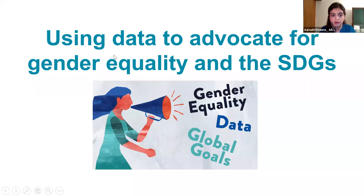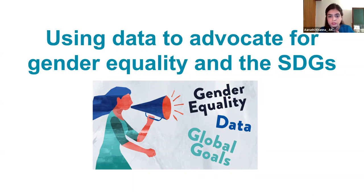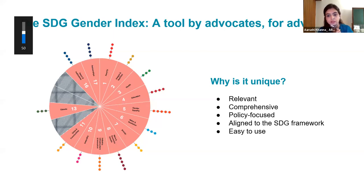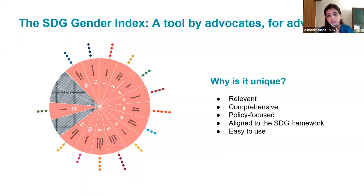It's great to see that we have so many participants who've engaged in research and advocacy and have some comfort in using gender data. I hope the conversation today would be useful for everyone as we spend some time introducing you to the SDG gender index. The SDG gender index is the most comprehensive index on gender equality aligned to the sustainable development goals. The index includes 51 gender-sensitive indicators across 14 of the 17 sustainable development goals, and it covers 129 countries across the world. Each goal is covered by three to five indicators.